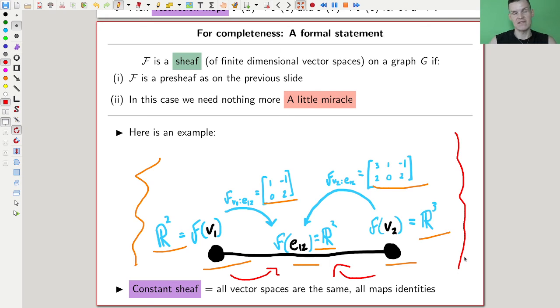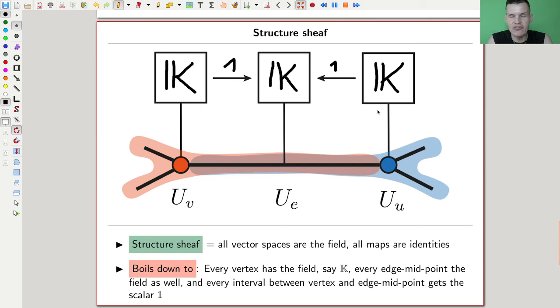For example, the constant sheaf would be, what could that be, if all vector spaces are the same and all maps are the identities, right? We have a choice of a matrix. So I just associate the same vector space to everything, and I just put the identity maps on the edges, sorry, on the interactions, so identity and identity, and I call that a constant sheaf. Makes sense, right? And what will be a constant sheaf in general? Or in algebraic geometry, something very similar. And that's literally everything you ever see in algebraic geometry will have some nice picture on graphs.